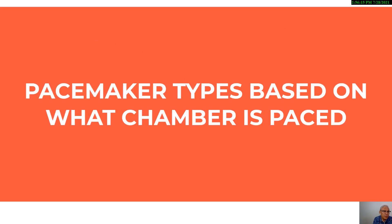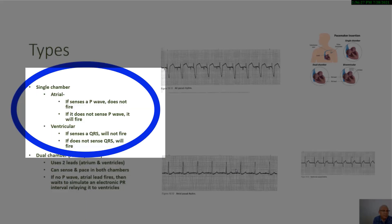Pacemakers can also be classified according to which area of the heart is being stimulated — the atria, the ventricles, or both. In a single chamber pacemaker, the electrical energy is applied in only one chamber, either the atrial or the ventricular.